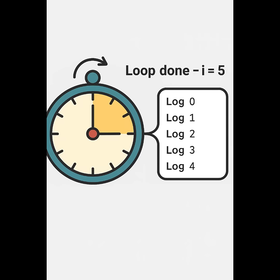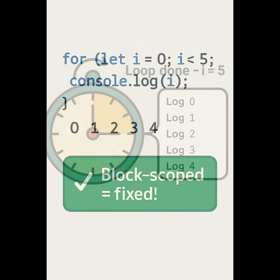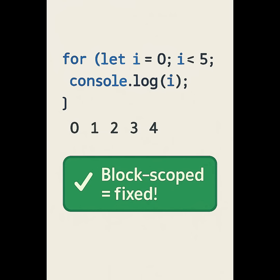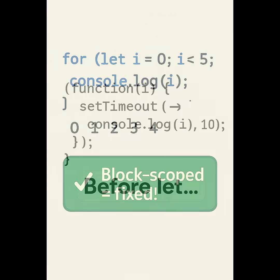Want the right values? Just switch to let. Now each iteration has its own scoped i. Works perfectly.